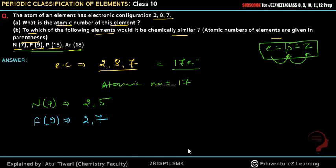The configuration is 2-8-5. If we talk about argon, argon's atomic electronic configuration is 2-8-8. So this is the outermost shell.